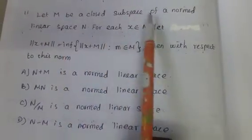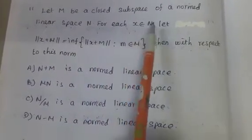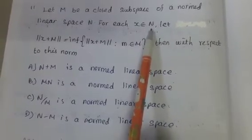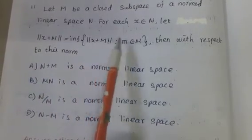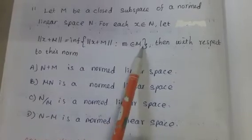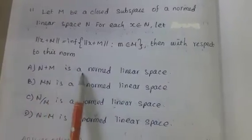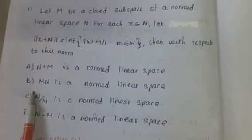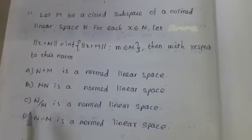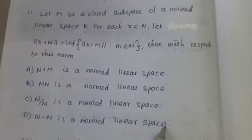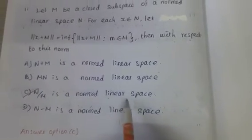Eleventh question: Let M be a closed subspace of a normed linear space N. For each X belonging to N, define norm of X plus M equal to infimum of norm X plus m, for m belonging to capital M. Then with respect to this norm — Absent A, N plus M is a normed linear space; Absent B, MN is a normed linear space; Absent C, N by M is a normed linear space; Absent D, N minus M is a normed linear space. The correct answer is Absent C, N by M is a normed linear space.